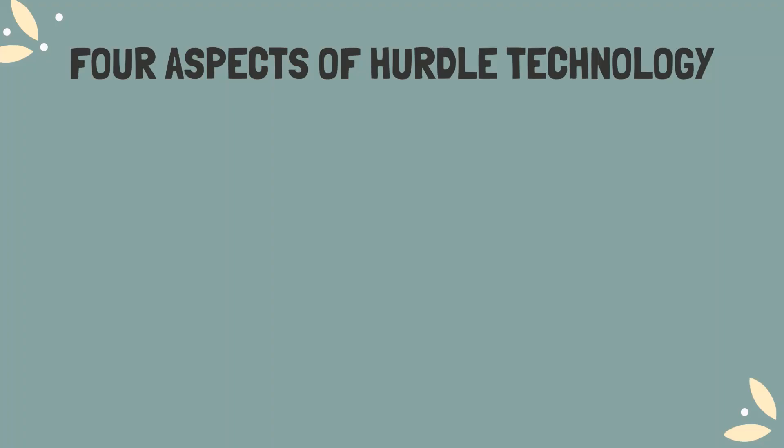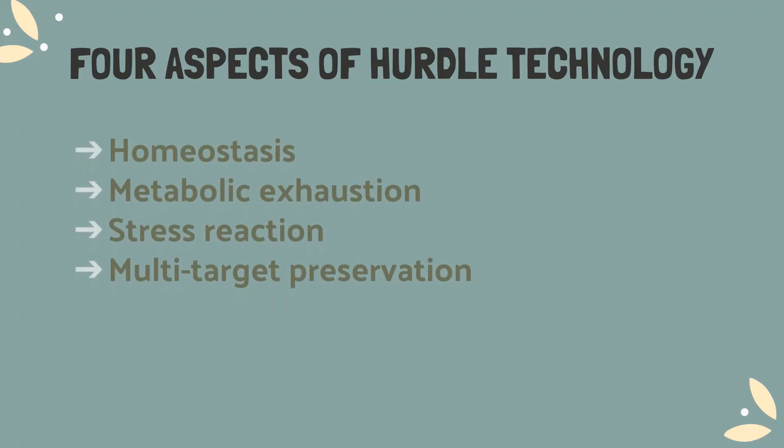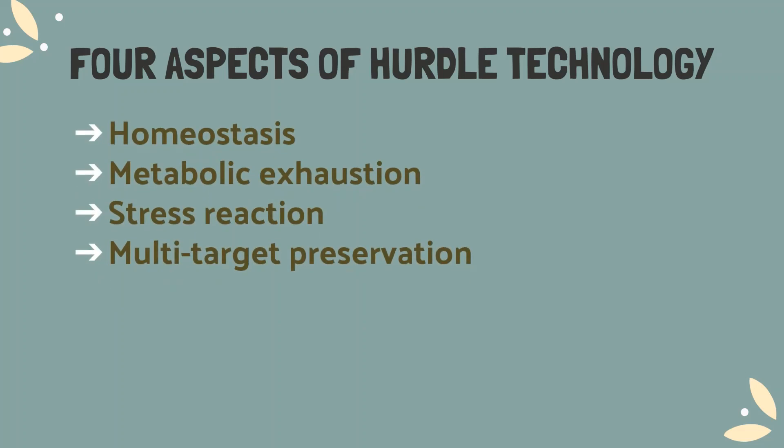There are four aspects of Hurdle Technology. So do remember the terms guys. First is homeostasis and metabolic exhaustion, stress reaction, and multi-target preservation.